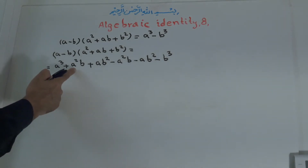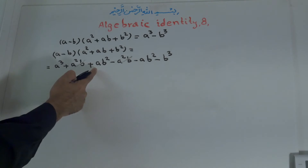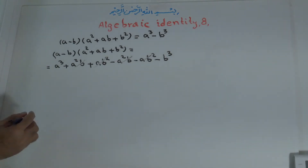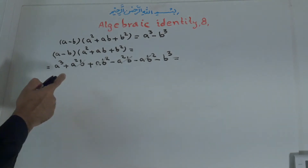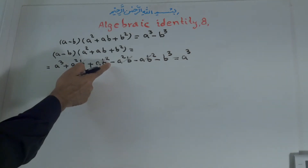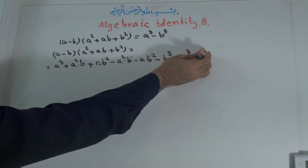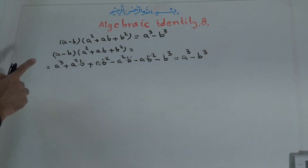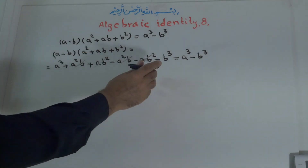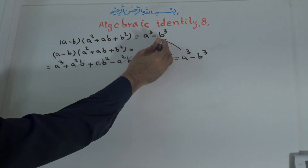Now, A²B and minus A²B cancel. AB² and minus AB² will cancel. The only thing remaining is A³ minus B³. So we proved that the product of these two is A³ minus B³. That is this identity.